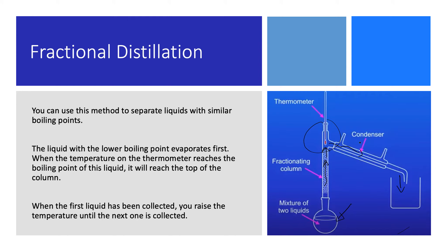The temperature can drop again, and because of this we can get mixtures of both liquids coming through. We have to wait for the temperature to be constant before we can be sure that the liquids have fully separated. One liquid will be left in the fractionating column and one liquid will be collected in the beaker. At the start we may get a mixture of both liquids, but more of the lower boiling point liquid.